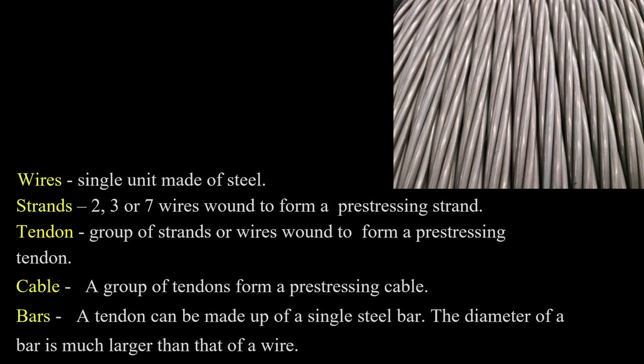A few terminologies that are commonly used. The first one is wire — a single unit made of steel, just a thin wire. Strands are a combination of wires; it could be two, three, or seven — the number of wires wound together. You can see strands of wires in the picture shown.